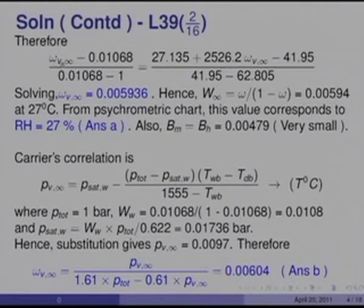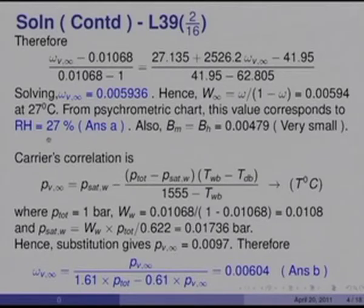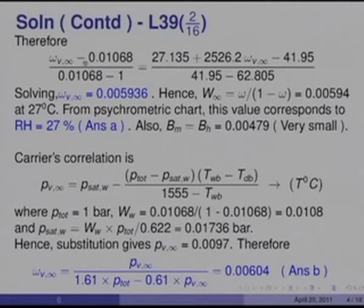Solving for omega_V_infinity gives 0.005936, which gives specific humidity w equals omega over (1 − omega) equal to 0.00594 at 27°C. From the psychrometric chart, this corresponds to a relative humidity of 27%, which is answer A. Also, B_m equals B_h and is very small — substituting gives B_m = B_h = 0.00479.